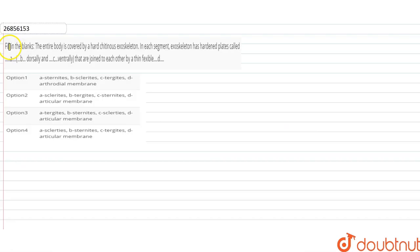The question is: fill in the blanks. The entire body is covered by a hard cutaneous exoskeleton. In each segment, the exoskeleton has hardened plates called [blank], then [blank] dorsally and [blank] ventrally, and are jointed to each other by a thin, flexible [blank]. So we need to fill in the blanks.